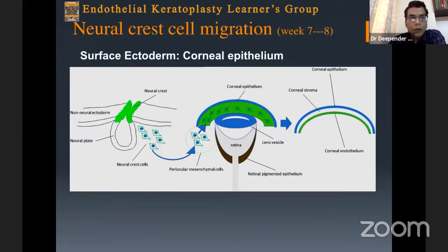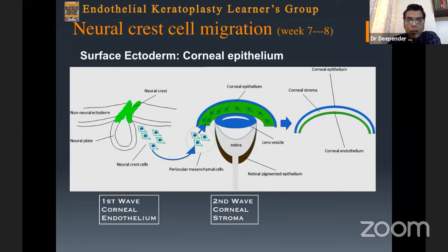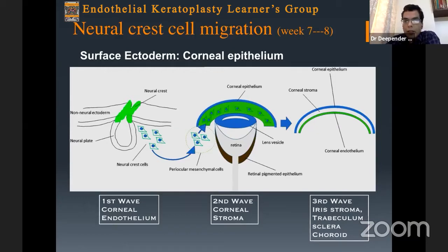The rest of the anterior segment structures are made by the neural crest. The neural crest is basically the junction between the neural plate — or in the case of the eye, the optic cup — and the non-neural ectoderm, or surface ectoderm. These cells, also called neural mesenchymal cells, form the anterior segment structures in three waves: the first wave gives rise to the corneal endothelium, the second to the corneal stroma, and the third forms the iris stroma, trabeculum, sclera, and choroid.